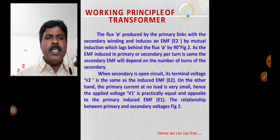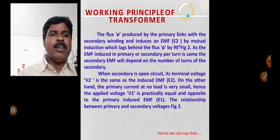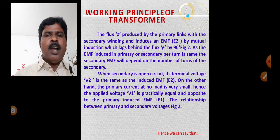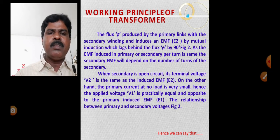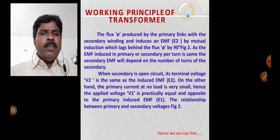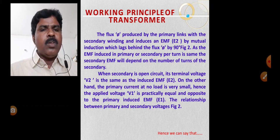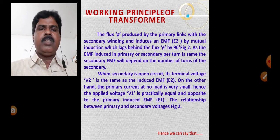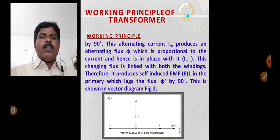On the other hand, the primary current at no load is very small. Hence, the applied voltage V1 is practically equal and opposite to the primary induced EMF E1. This is the relationship between primary and secondary voltages shown in figure 2.